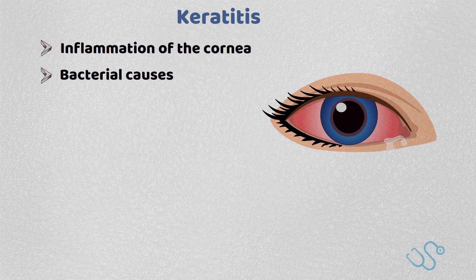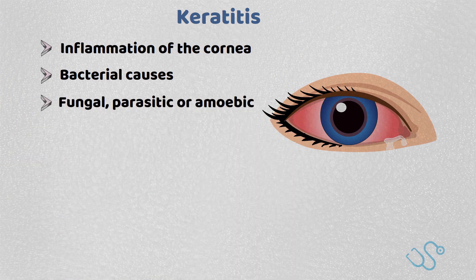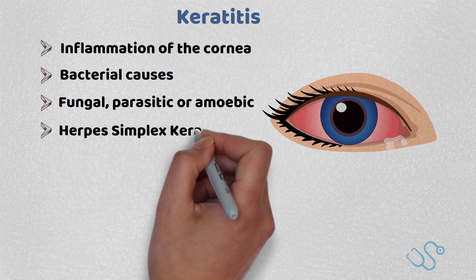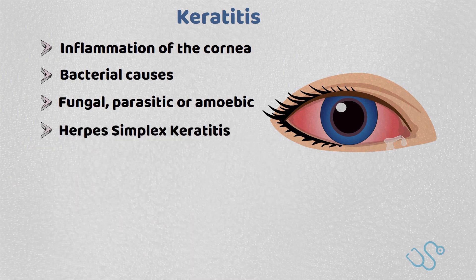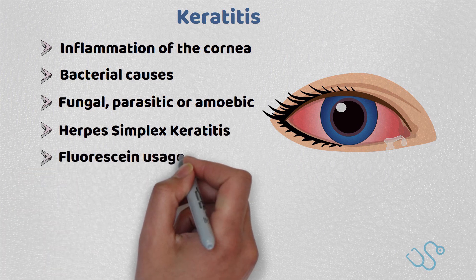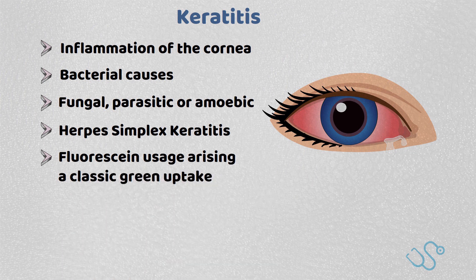Herpes simplex keratitis, or dendritic ulcers, are however more common in examinations, with a slit-lamp examination and fluorescein usage classically giving a green uptake — a hallmark of this condition — with treatment revolving around antivirals in the urgent eye clinic.